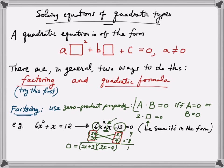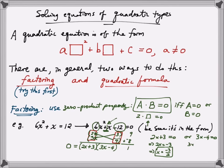This is all set equal to zero. Using the zero product property, either 2x + 3 = 0 or 3x - 4 = 0. From 2x + 3 = 0, we get x = -3/2. From 3x - 4 = 0, we get x = 4/3. This illustrates a direct application of the zero product property in solving quadratic-type equations. In the next examples, I'll apply the same technique to variations.